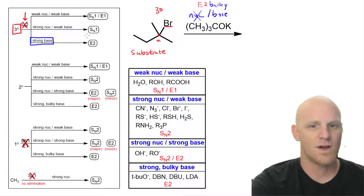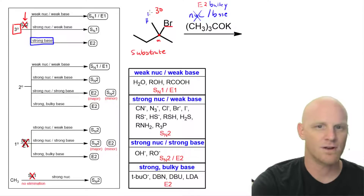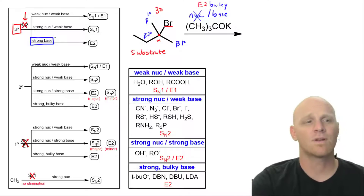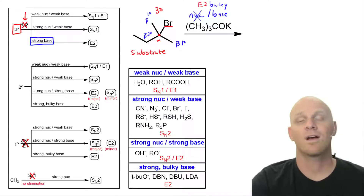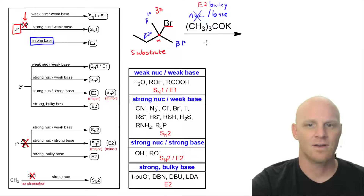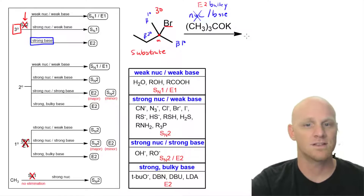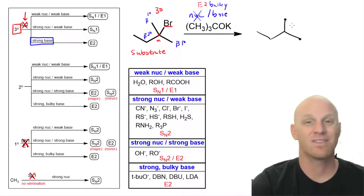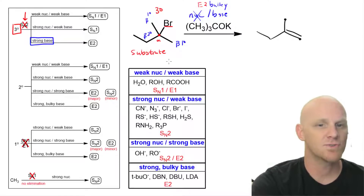Identifying our beta carbons: we've got a primary beta carbon here, another primary beta carbon here, and a secondary beta carbon. With a bulky base, we're not going after Zaitsev's rule — we're trying to form the Hofmann product as the major product. So we should be using one of those primary beta carbons to deprotonate and form our alkene. Whether I use this primary or that primary, they're totally equivalent — it doesn't matter. There's our major E2 product.